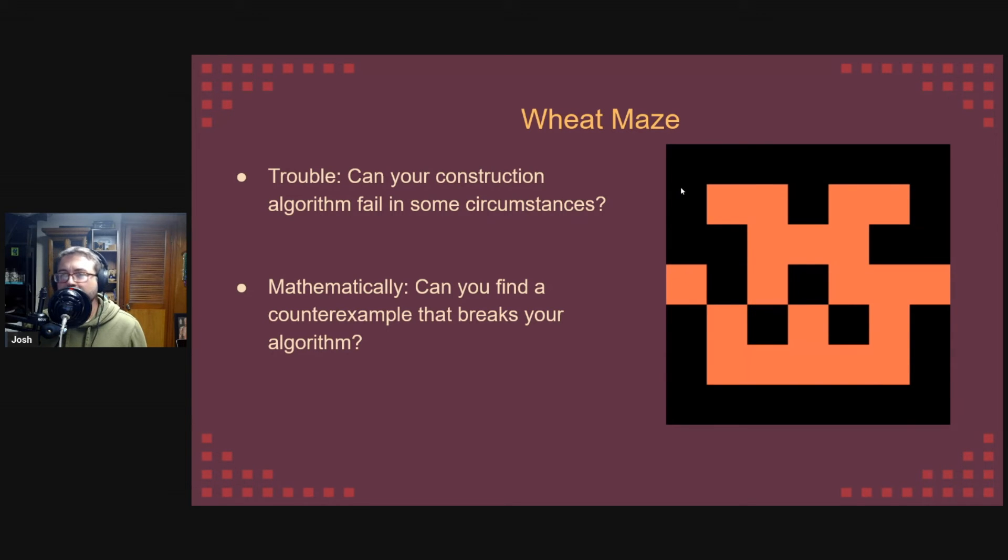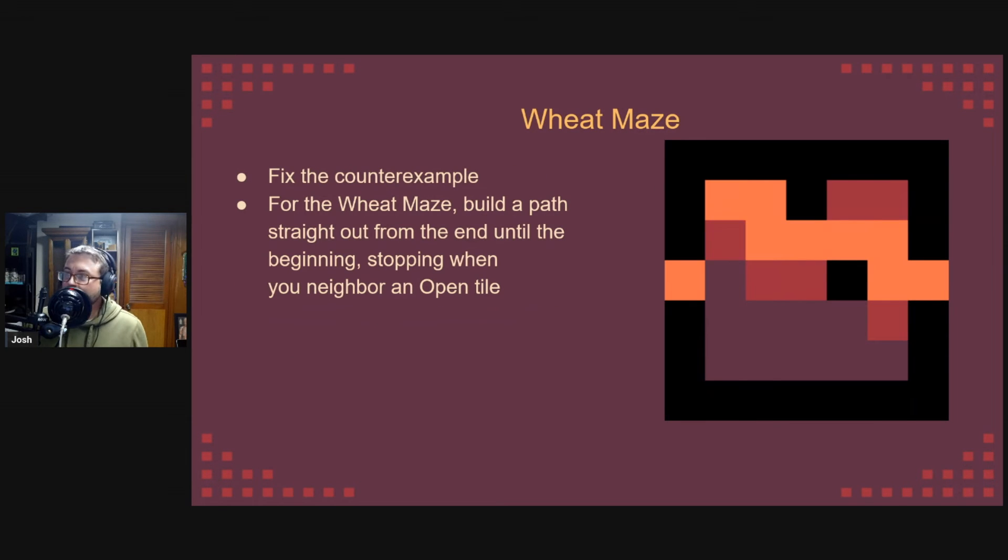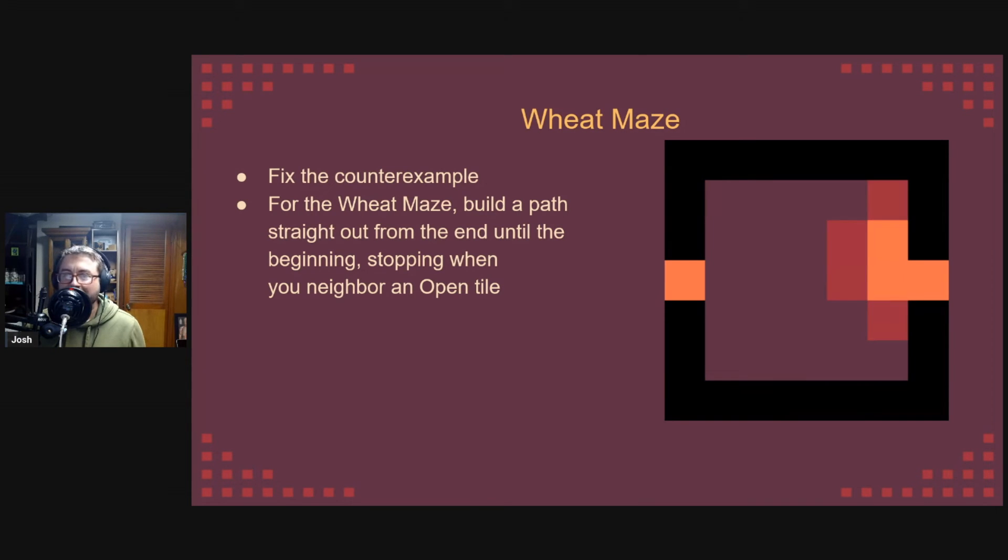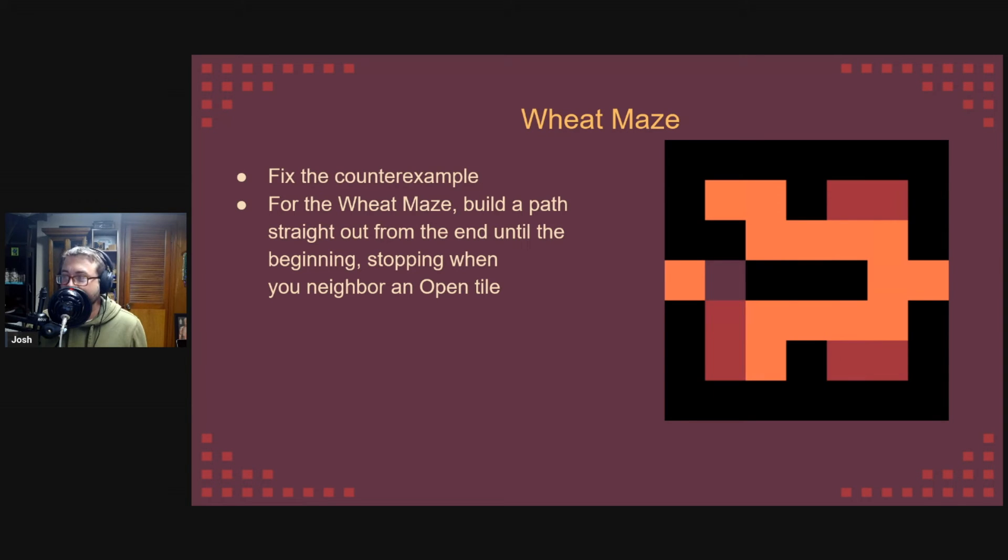If your algorithm is searching for the solution, you have to be aware of any bugs where it might not reach the solution. In math speak, you have to look for the counter example. What could go wrong? So when you find that counter example, you can fix it. It's possible to guard against them. In the wheat maze, the gold tile of the maze looks for an open neighbor. If it can't be found, it creates a path towards the start tile until an open neighbor is found. This guarantees a solution to the maze, even if that nice no looping property isn't intact at the end of that.